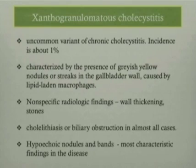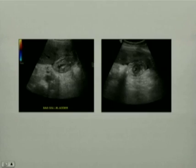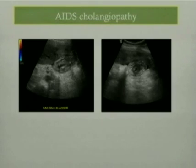Cholelithiasis or biliary obstruction is seen in almost all cases of xanthogranulomatous cholecystitis. The most characteristic radiologic findings are hypoechoic nodules and bands as seen on CT. Just to show a comparison — another entity can also demonstrate very thickened gallbladder wall and appearance similar to an inflamed gallbladder. These two images demonstrate a markedly thickened gallbladder wall with pericholecystic fluid; however, the patient was totally asymptomatic and was being scanned for her kidneys. On further history, the patient had AIDS, and a diagnosis of AIDS cholangiopathy was therefore forwarded.